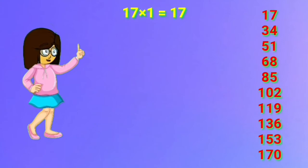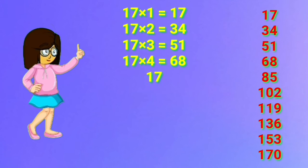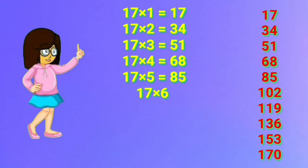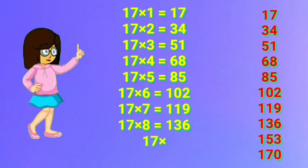17 one's are 17. 17 two's are 34. 17 three's are 51. 17 four's are 68. 17 five's are 85. 17 six's are 102. 17 seven's are 119. 17 eight's are 136. 17 nine's are 153. 17 ten's are 170.